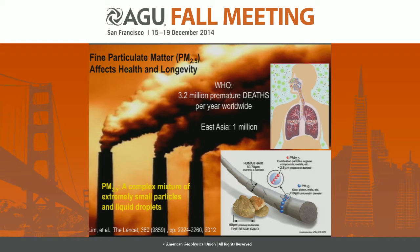WHO estimates that roughly 3.2 million people die prematurely due to PM2.5 every year, with each stage the worst at 1 million. That's why we want to have a comprehensive monitoring system to watch the PM2.5 concentrations from a general health perspective.